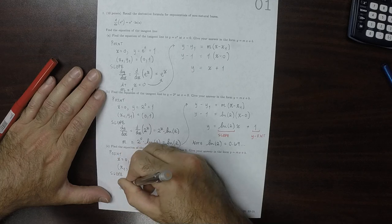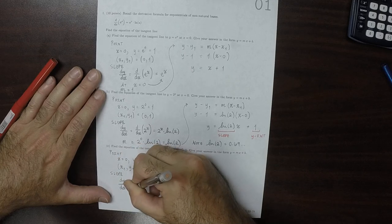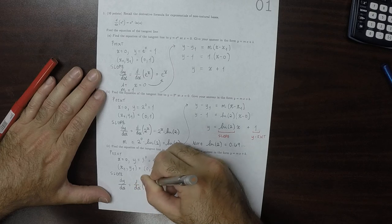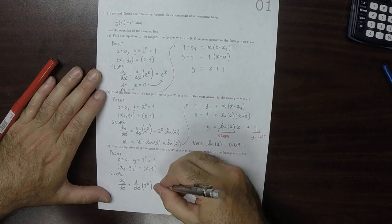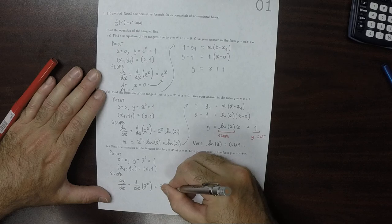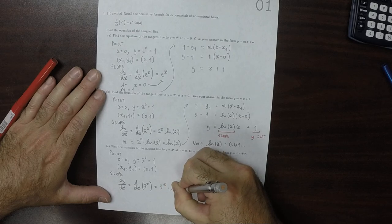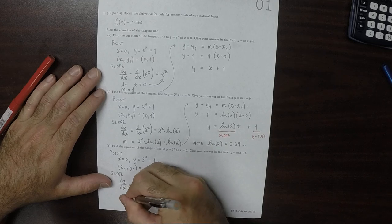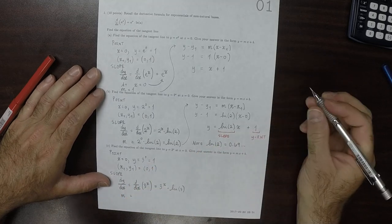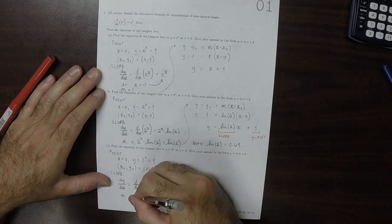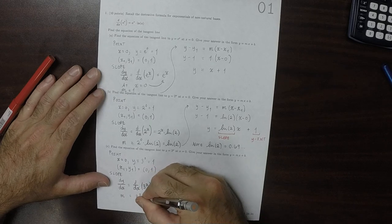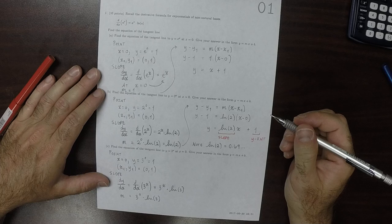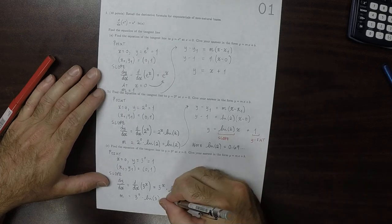The slope. Compute the derivative, which is 3 to x multiplied by the logarithm of 3. And then you plug in x is 0 to find the slope of the tangent line there. That is 3 to 0 multiplied by the logarithm of 3, which is the logarithm of 3.